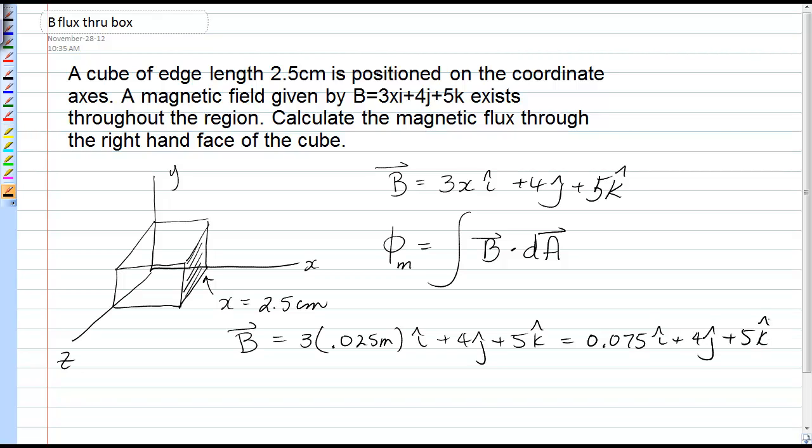So you have to be careful. If you see a variable, you don't necessarily have to integrate. If that variable is constant over the face that you're trying to calculate the flux through, then you don't have to integrate.